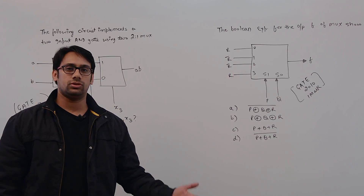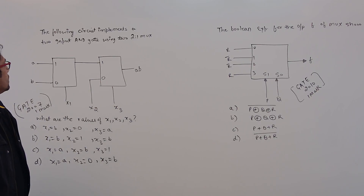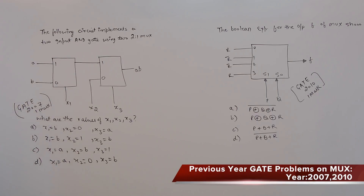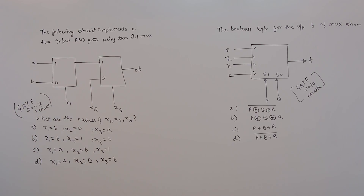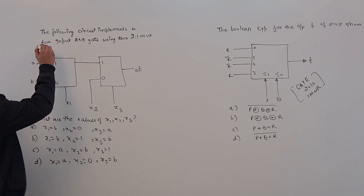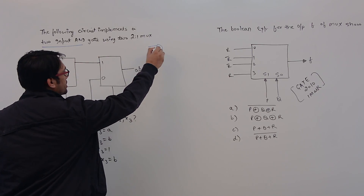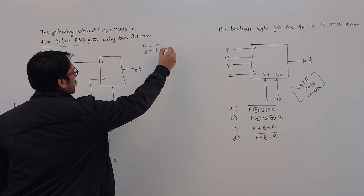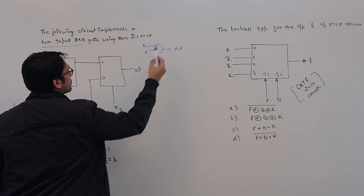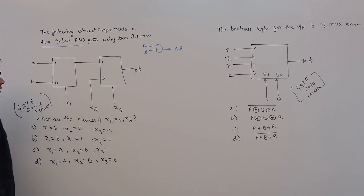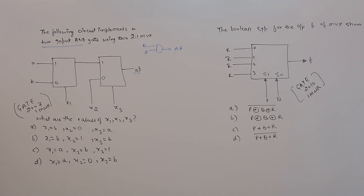Now let us consider these two questions. The first question is: the following circuit implements a 2-input AND gate using a 2-to-1 multiplexer. So if this is the AND gate, this is input A and this is input B, then the AND gate gives A dot B. We need to find the values of x1, x2, and x3 to implement this 2-input AND gate.